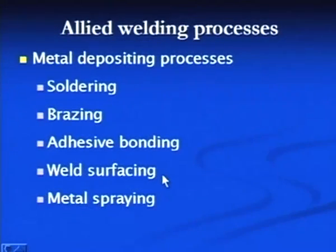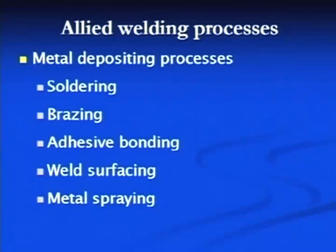In the weld surfacing process, the weld bead deposited at the surface is used to cover the external surface to protect it from wear and tear such as abrasion, adhesion, corrosion, or erosion. Welding based processes like shielded metal arc welding, submerged arc welding, or flux cored arc welding are normally used for developing wear resistant layers at the surface.